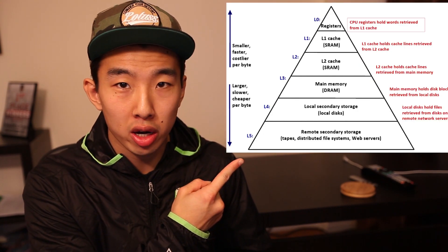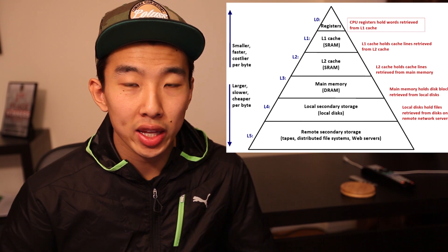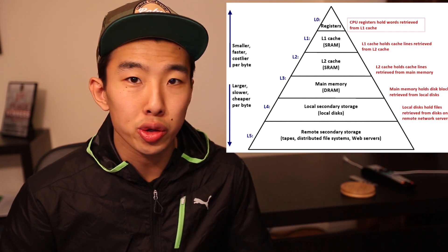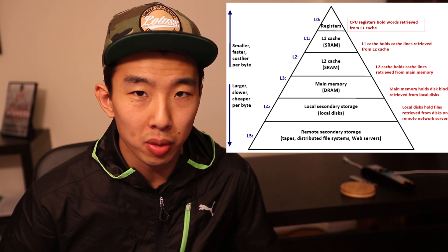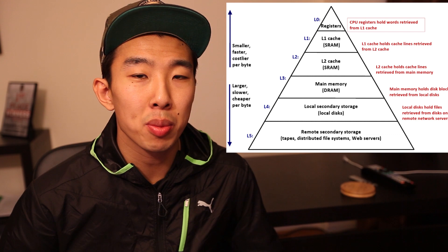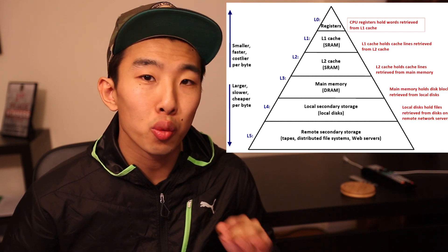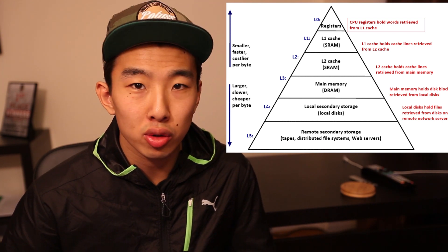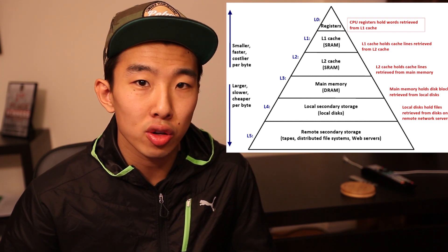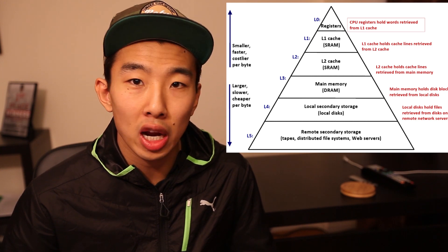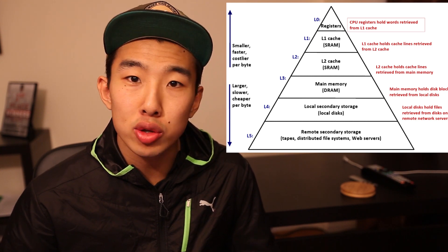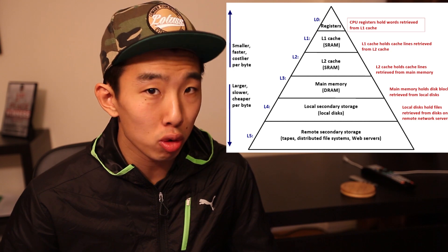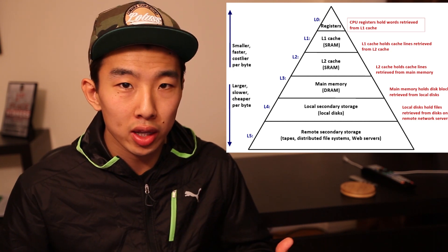The basic foundation of computer memory is something called the memory hierarchy. Here is a picture of the memory hierarchy. Don't look too closely at it yet, just let me introduce it first. Check out the bottom of the memory hierarchy. These include memories that are really slow but really big. Examples include your hard drives, your flash drives. They can hold terabytes of data and have your music, your games, your movies.